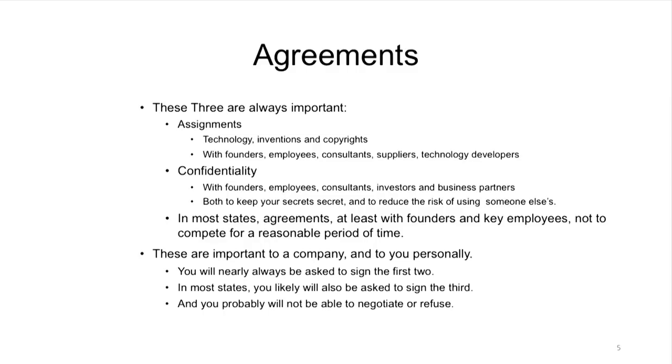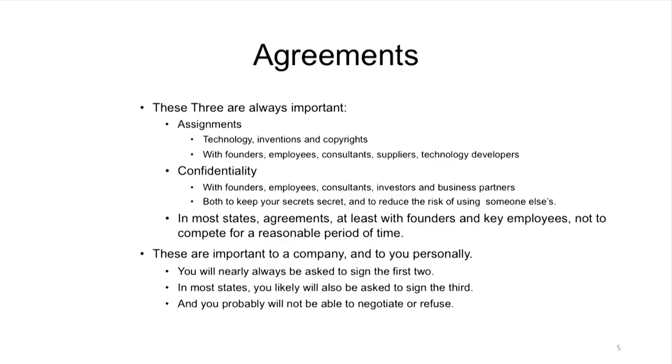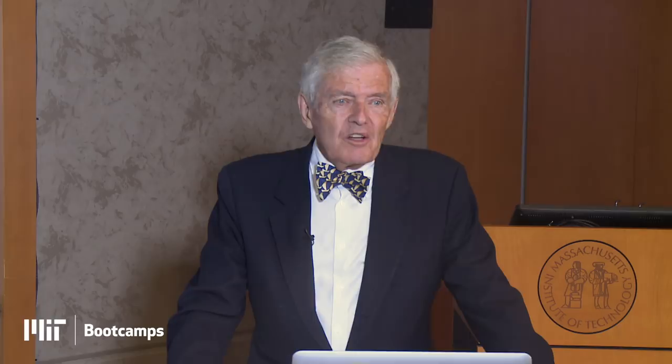The first important agreement is assignment: who assigns what to whom, and what rights remain with either party? Second, confidentiality — most of you have seen those and probably don't like them much because they bind you, and they do. Third, non-competes — unless you're living in California or North Dakota, non-compete agreements are valid at one level or another in every state. All three are important. You'll always be asked to sign confidentiality and assignment, and probably non-competes, and you're probably not going to have much ability to negotiate.